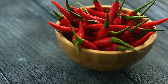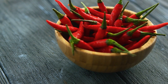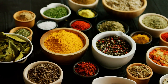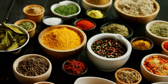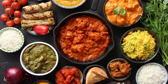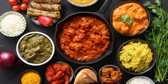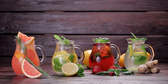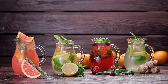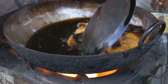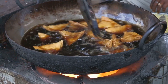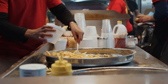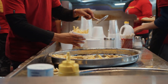Regarding foods to avoid: spicy foods can irritate the stomach lining and exacerbate symptoms, so limit or avoid hot peppers, curry, and other spicy dishes. Acidic foods can increase stomach acid production, potentially worsening ulcer symptoms — limit or avoid citrus fruits, tomatoes, vinegar, and caffeinated beverages. High-fat and fried foods can be harder to digest and may cause additional irritation, so limit or avoid foods like fried chicken, french fries, and high-fat cuts of meat.